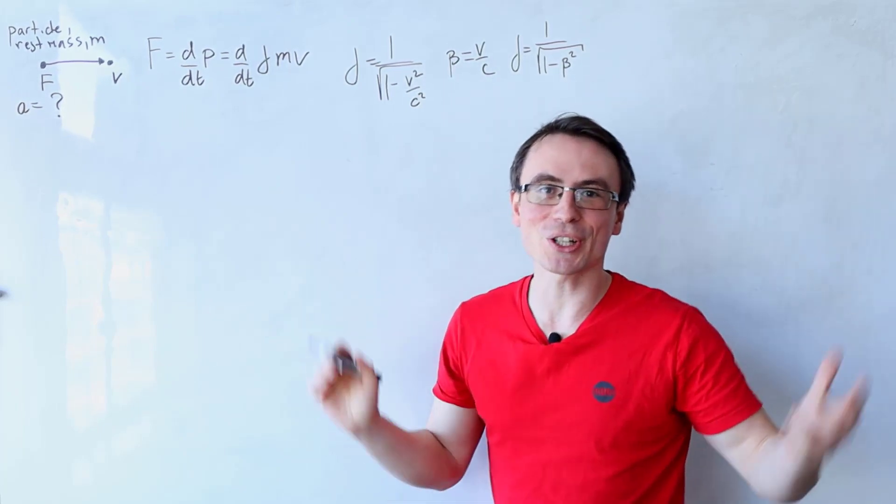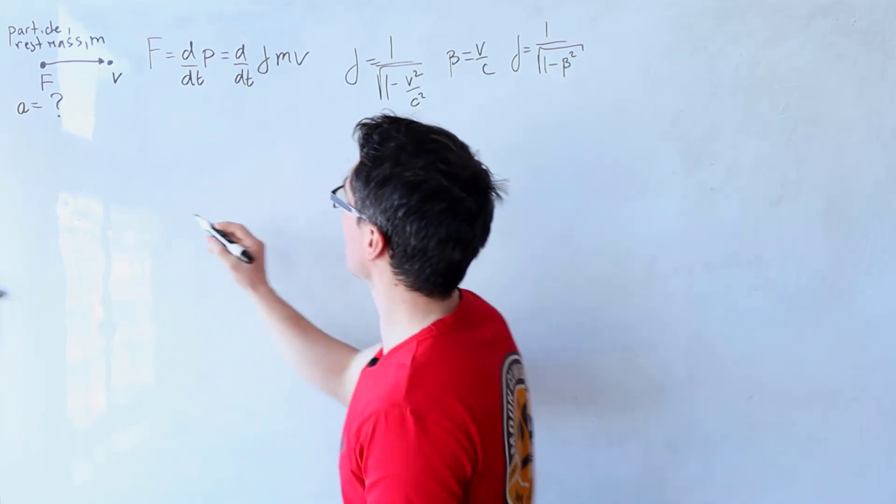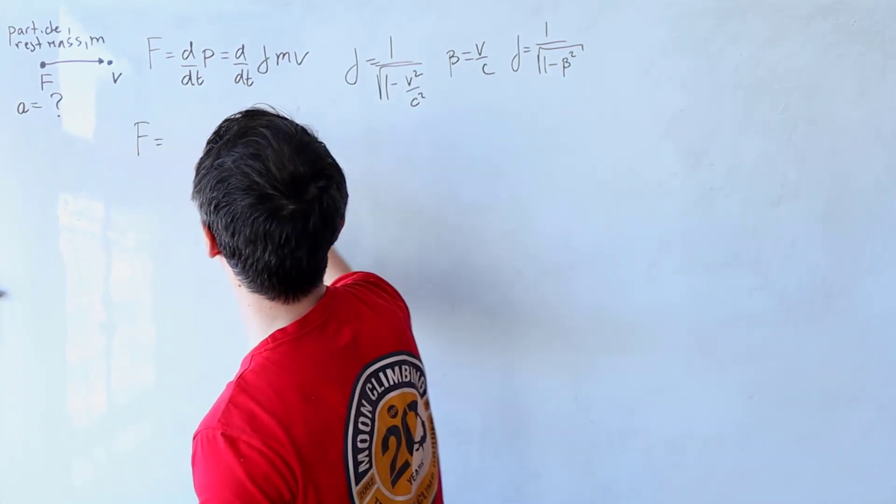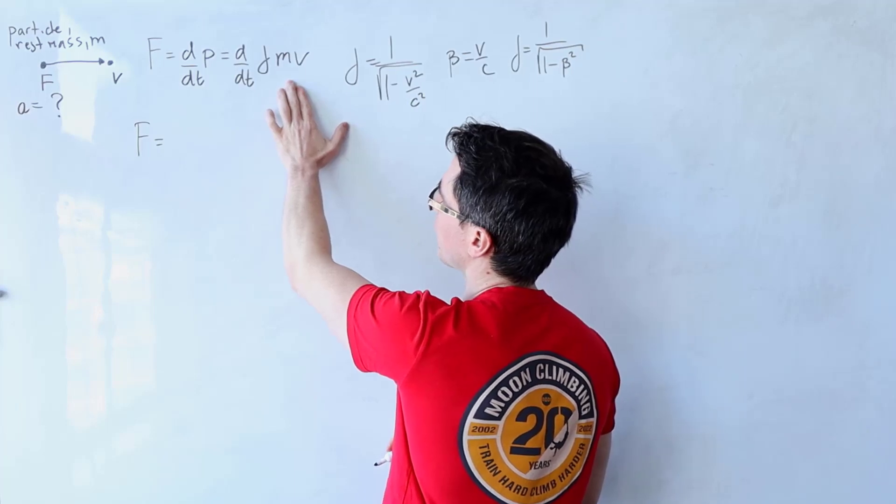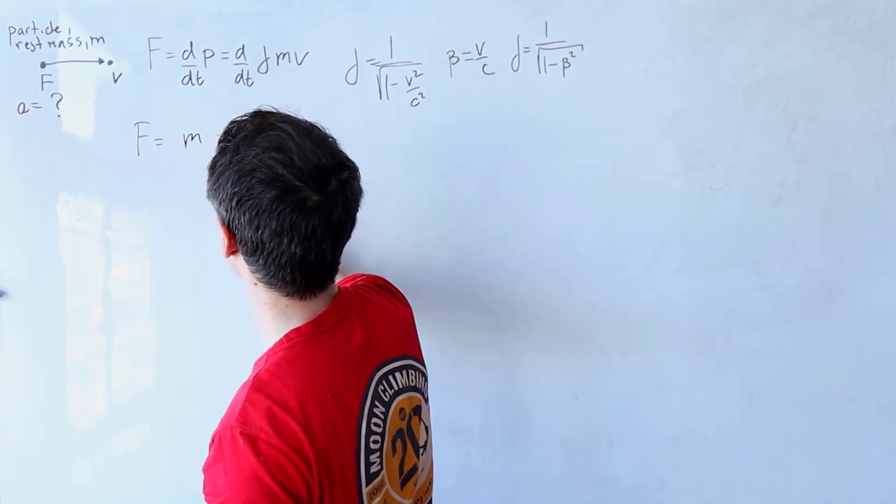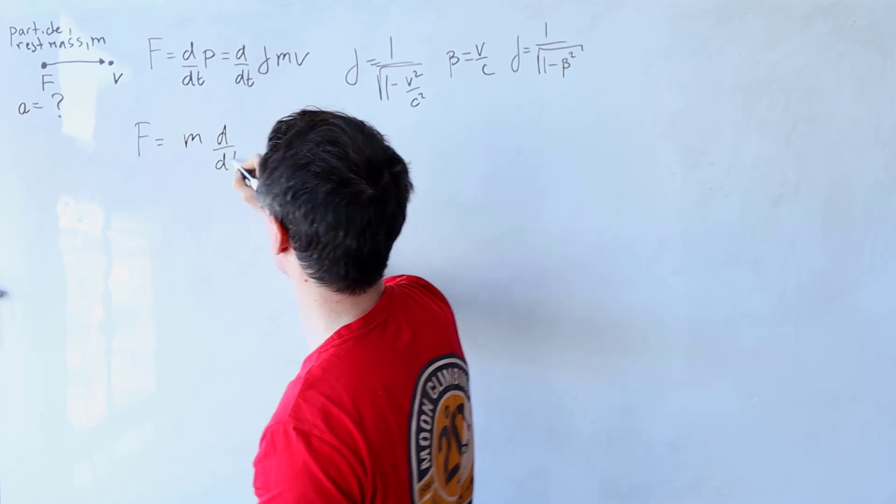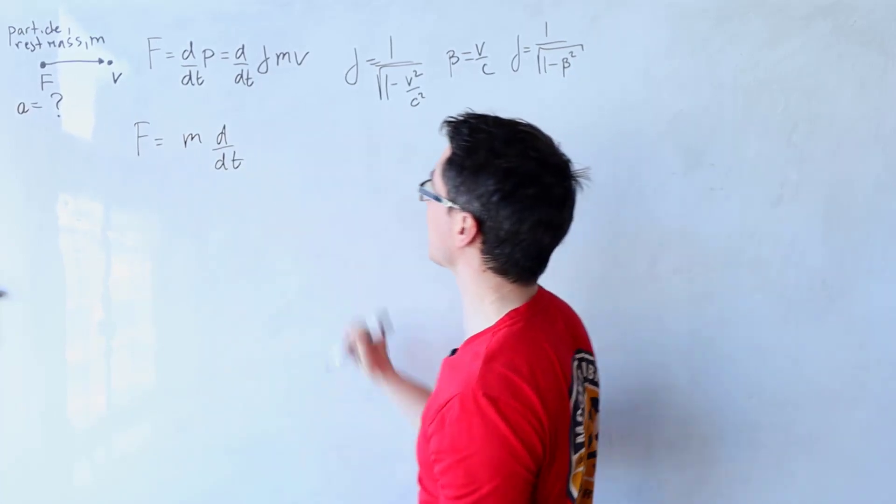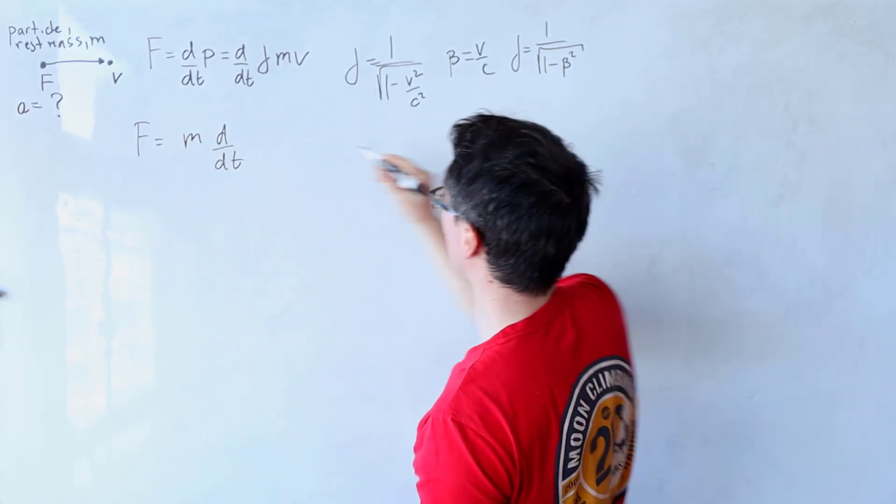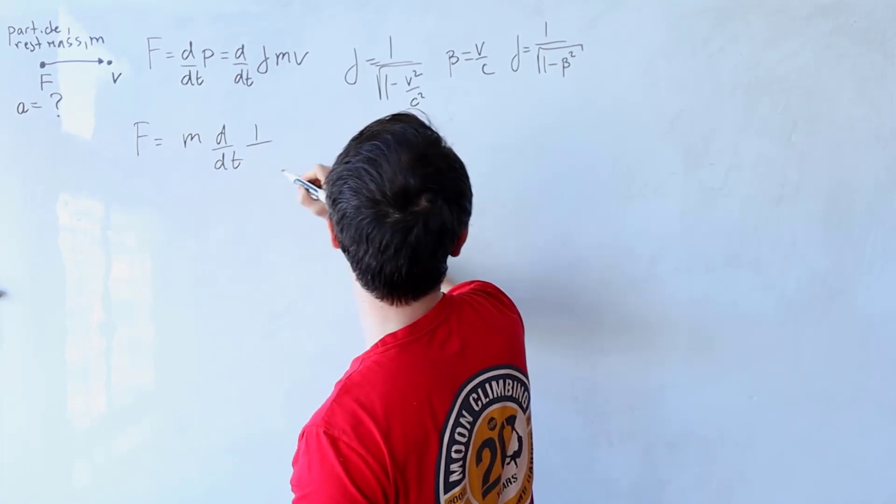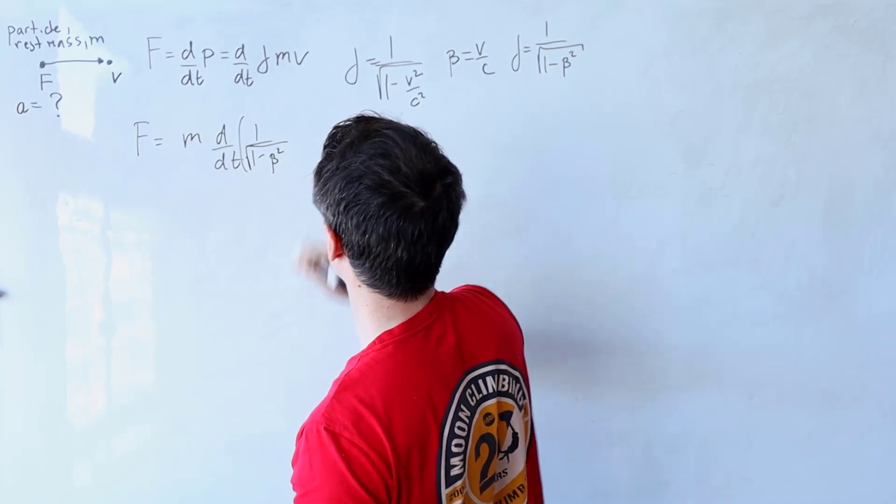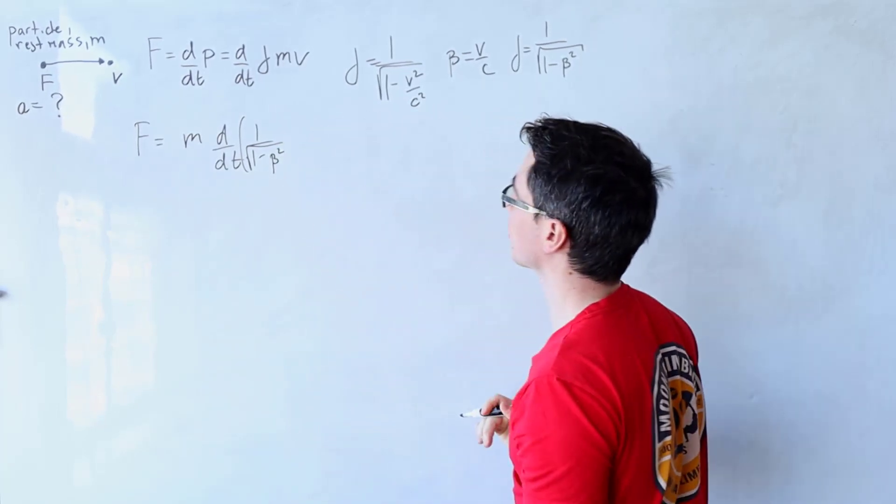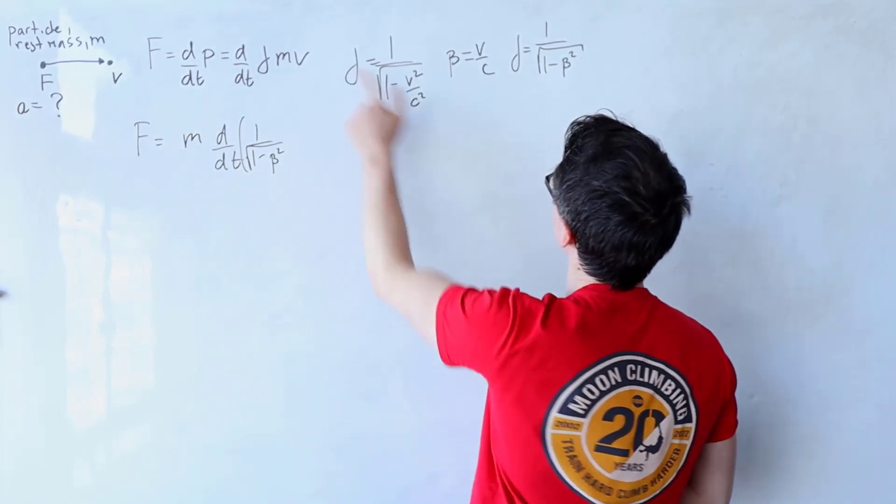Now let's differentiate to find our acceleration. So the force will be equal to, the first thing I'm going to do is I'm going to take out a factor of the mass outside of the derivative. What I have left inside is gamma, which is just equal to one minus beta squared, all square rooted.